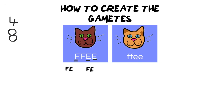Once the first capital F has been underlined twice, I'm not allowed to use it again. I then take my second capital F, underline it with one of the lowercase Es to create the next gamete, and finally use the last F with the final E to produce the fourth gamete from that individual.